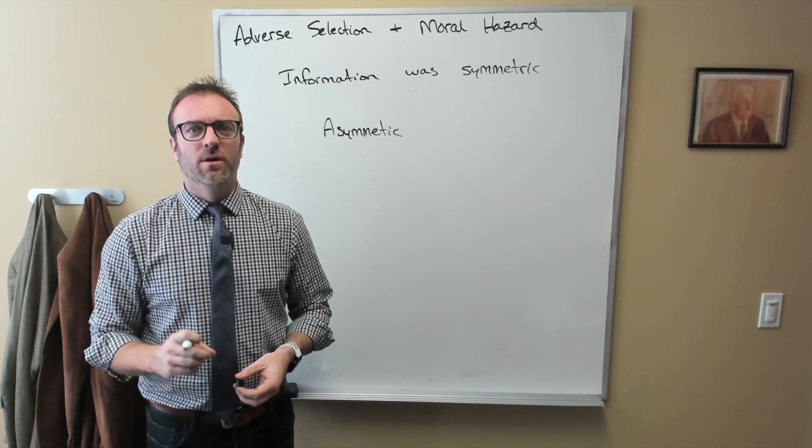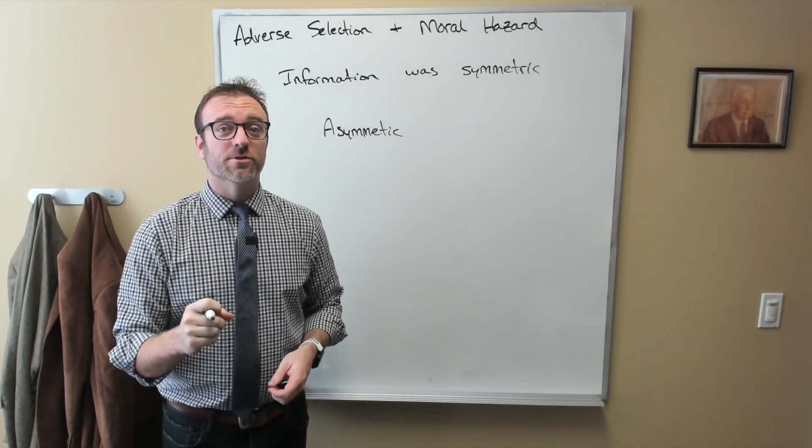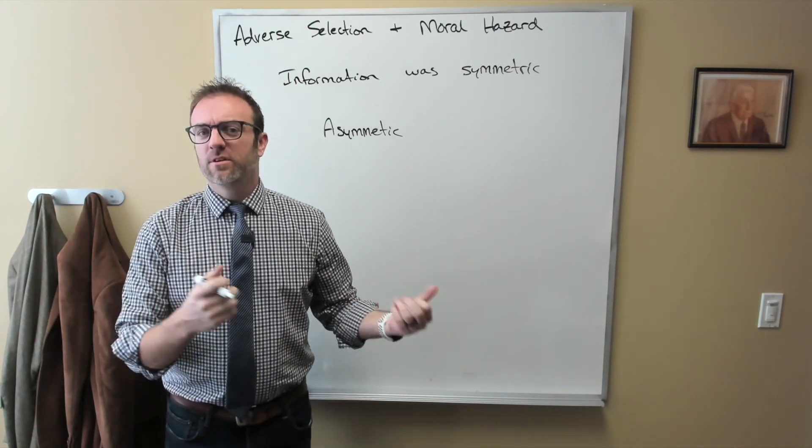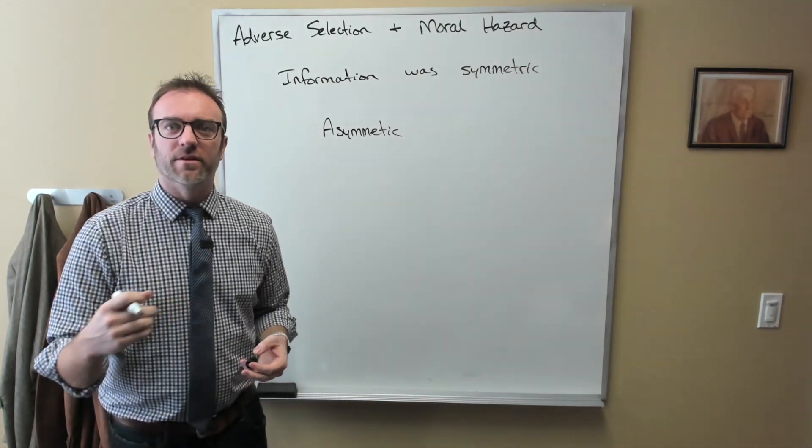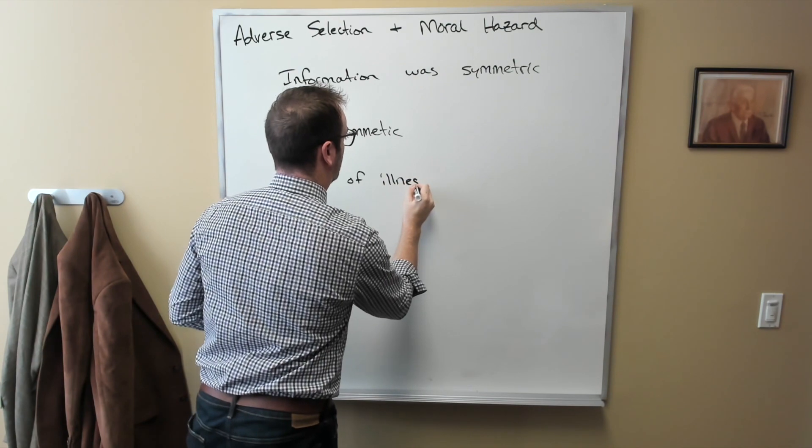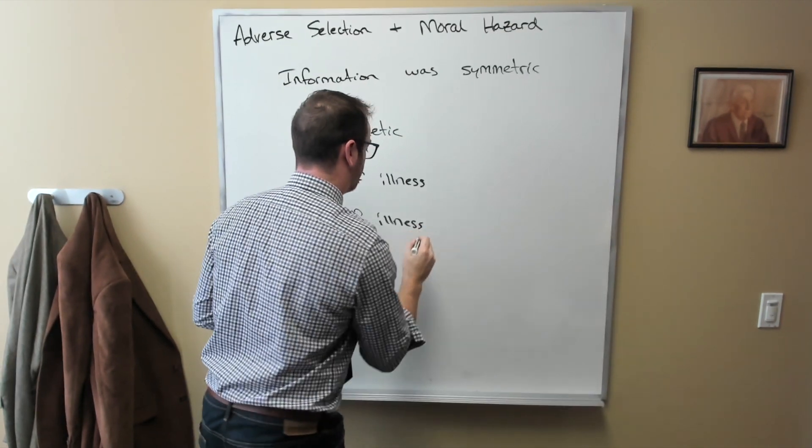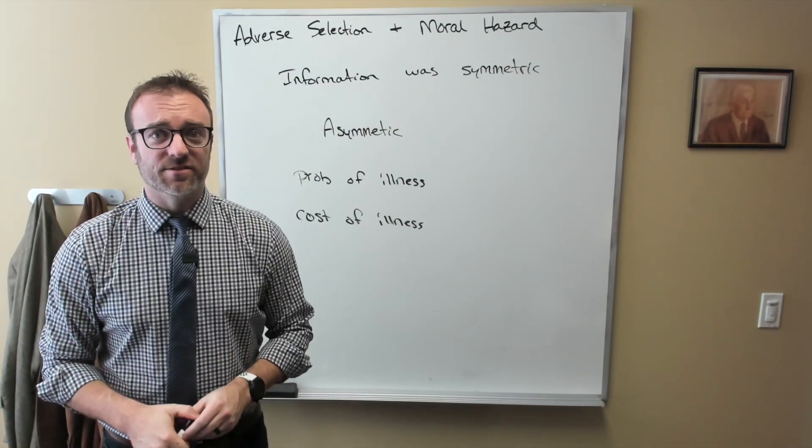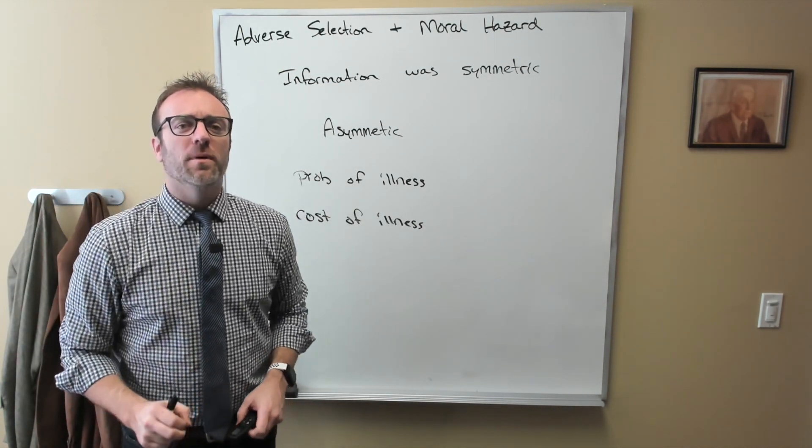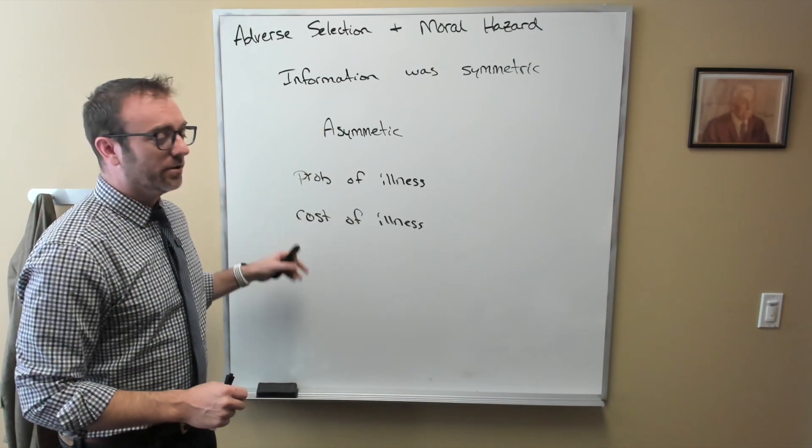So why do they do this? What they're trying to determine is what your likelihood of making a claim on your insurance policy is and how big of a claim it's going to be. In other words, if we think about this from last time, the insurance company is trying to figure out the probability of illness and the cost of illness. The reason they need to figure that out is because they don't necessarily know it just by looking at you. But you might have some privately held information that might help them get a more accurate picture of these two numbers.